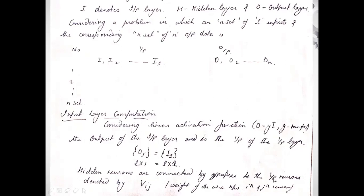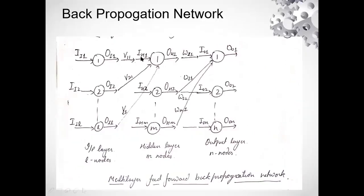Hidden neurons are connected by synapses to the input neurons, denoted by Vij. This means the weights are defined between the ith and the jth neuron. This is the weight synapse of connection between the input layer and the hidden layer. So V11 means the weight link between the first neuron of the input layer to the first neuron of the hidden layer, and V21 connects the second input neuron to the first hidden neuron, and so on.